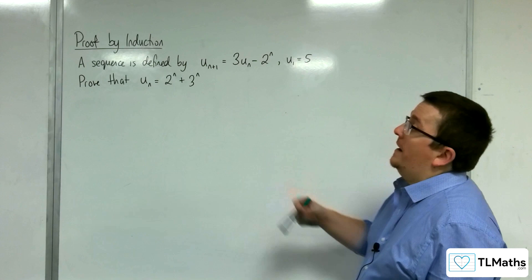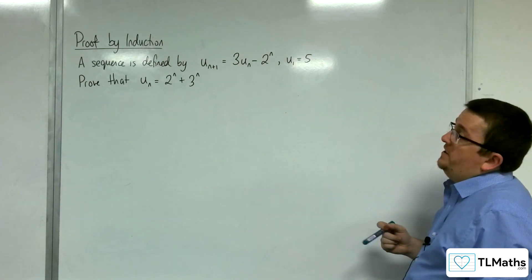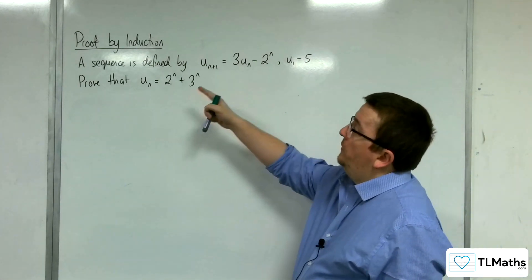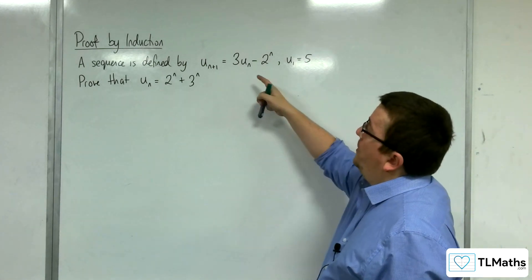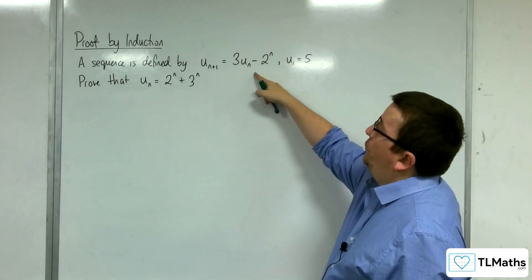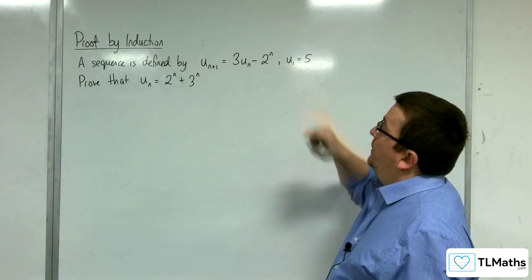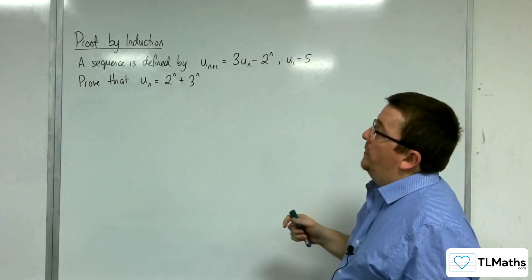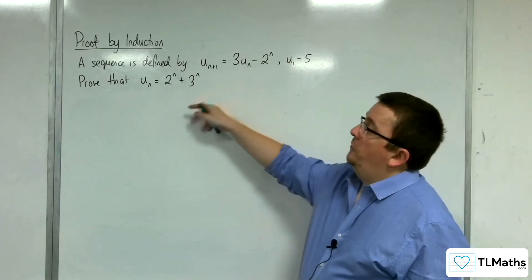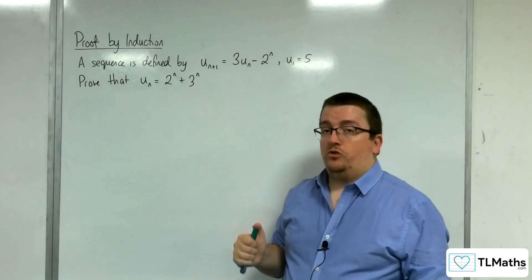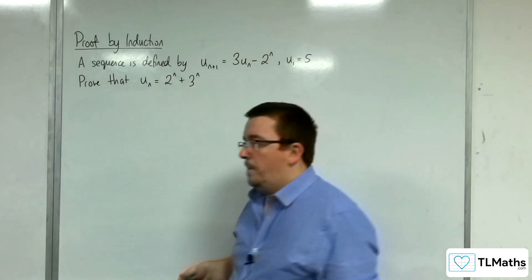In this video we're going to be looking at proving by induction, where we've got a sequence defined by u_{n+1} = 3u_n - 2^n, where u_1 is given as 5. Prove that u_n = 2^n + 3^n.